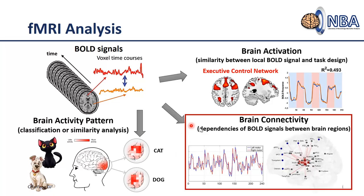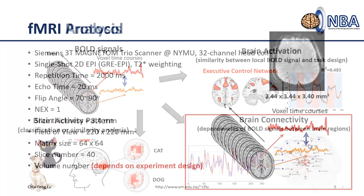This is the roadmap for this class. We are focused on brain connectivity or brain network analysis. Functional connectivity is actually one of the approaches that measures the dependencies or similarities between two signals. These signals should be acquired or extracted from different brain regions or brain locations. We can use the functional connectivity approach to estimate the dependencies or similarities between these signals.